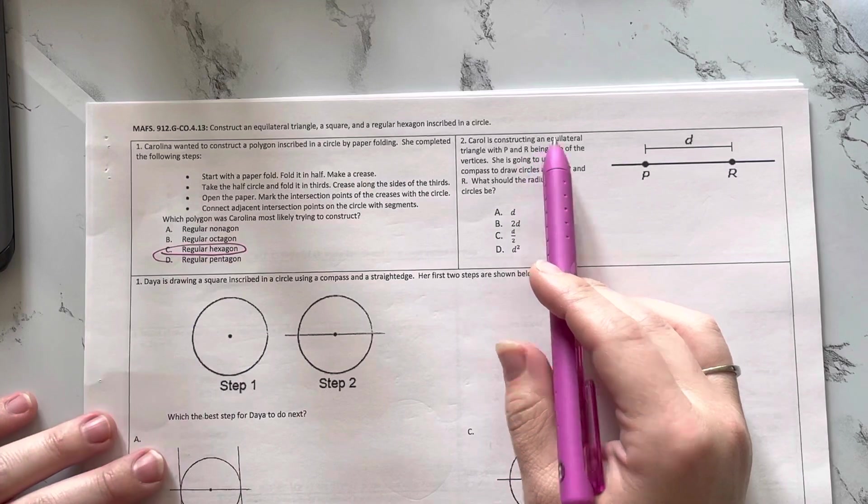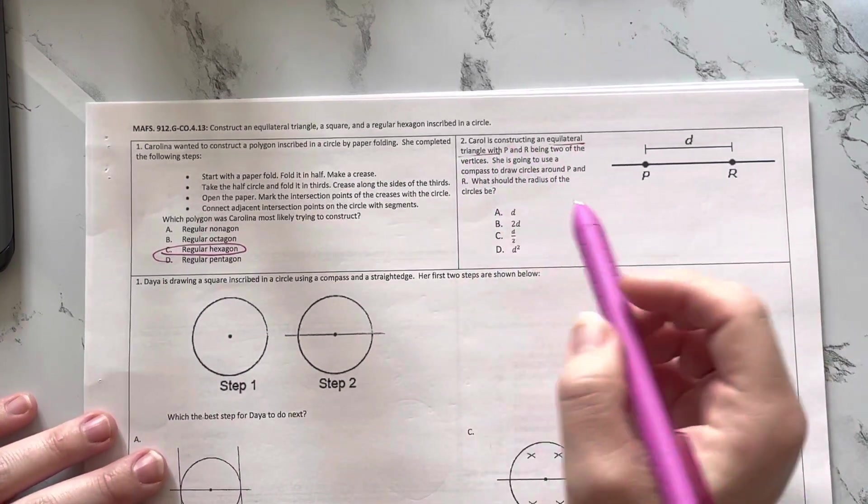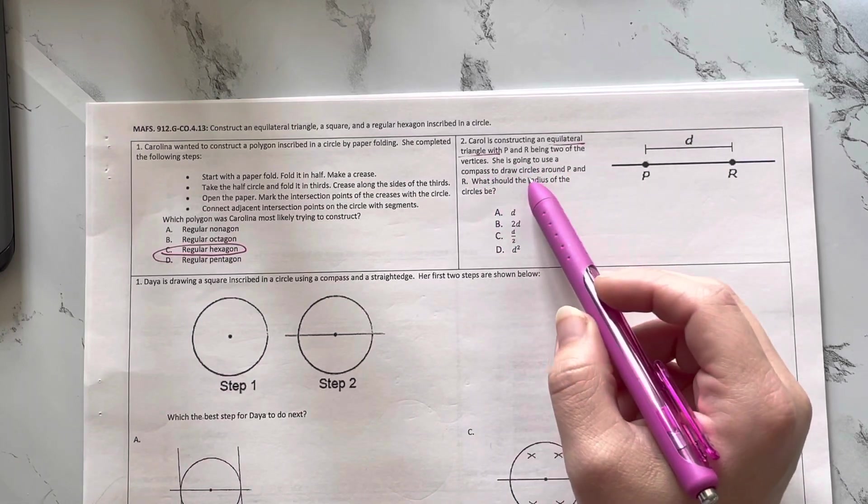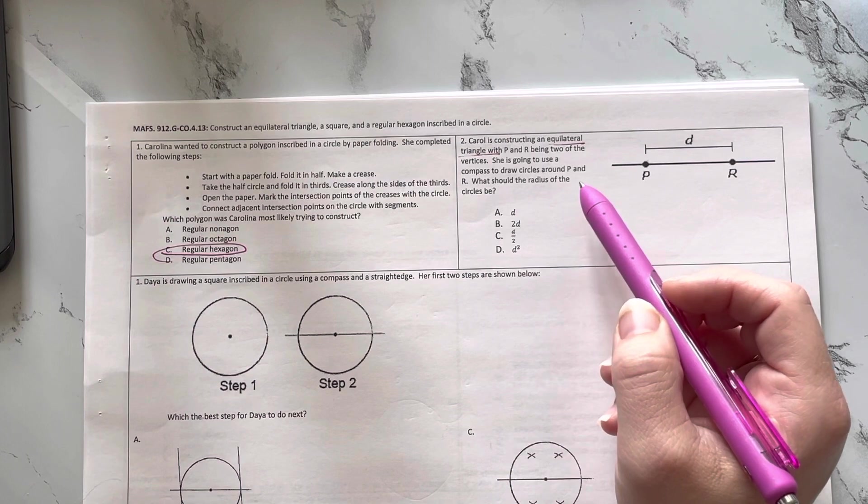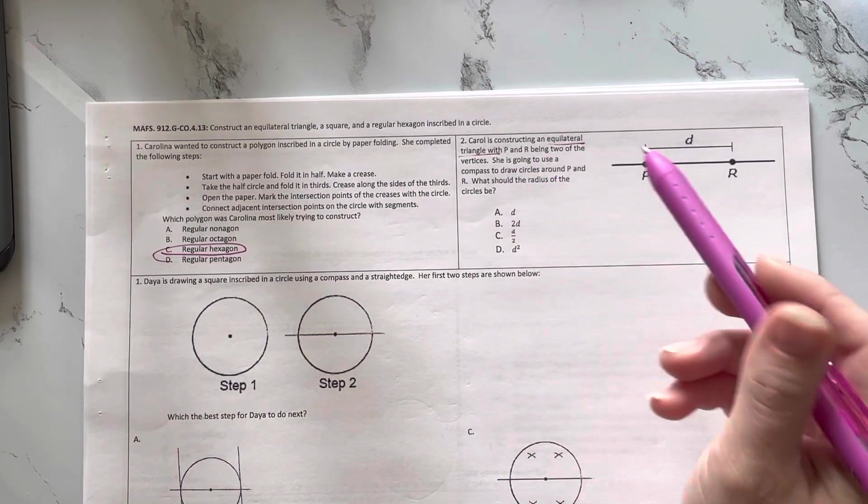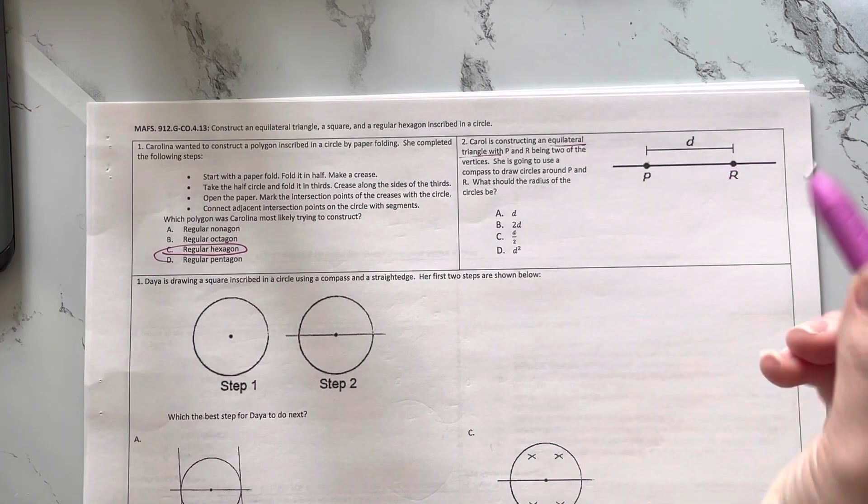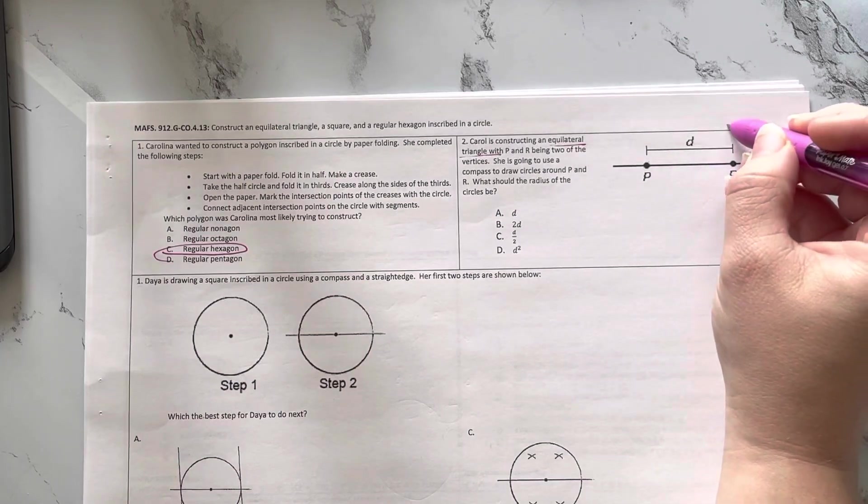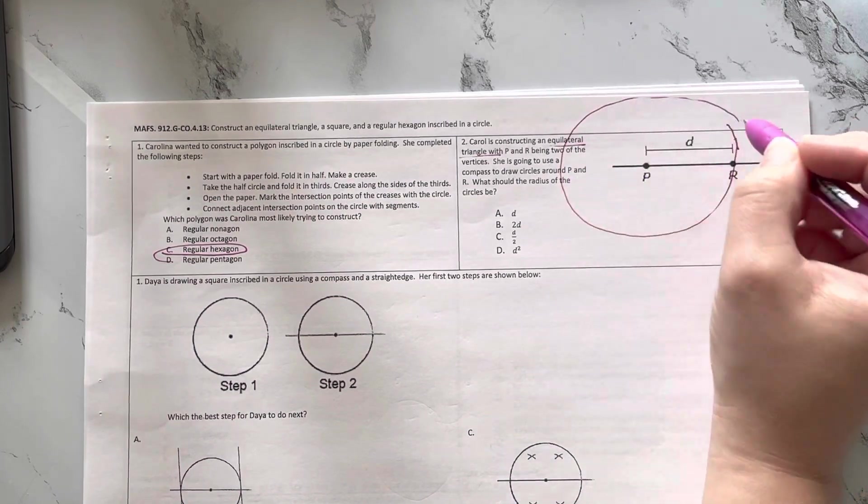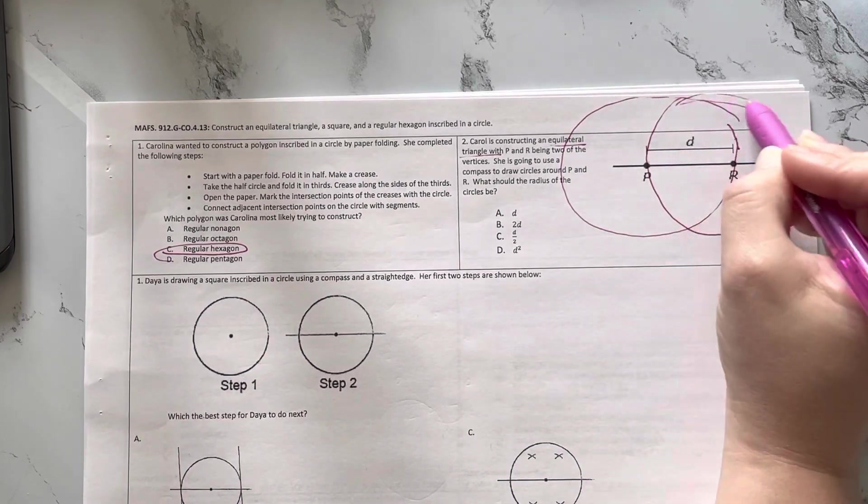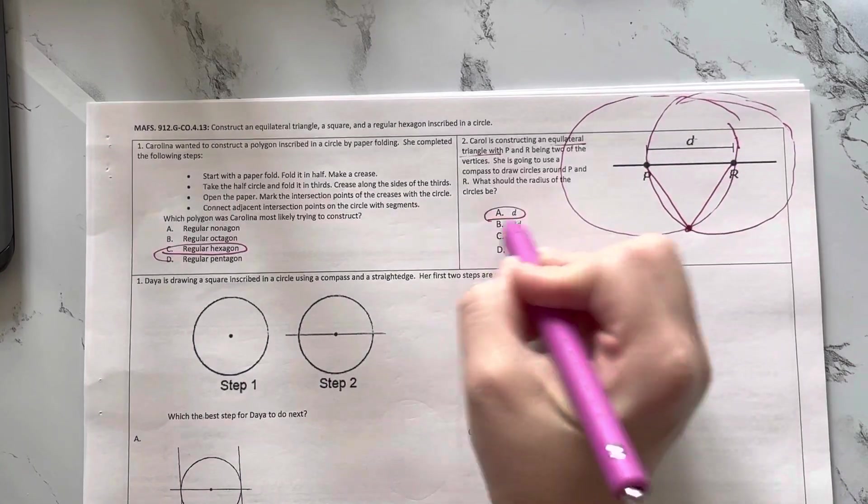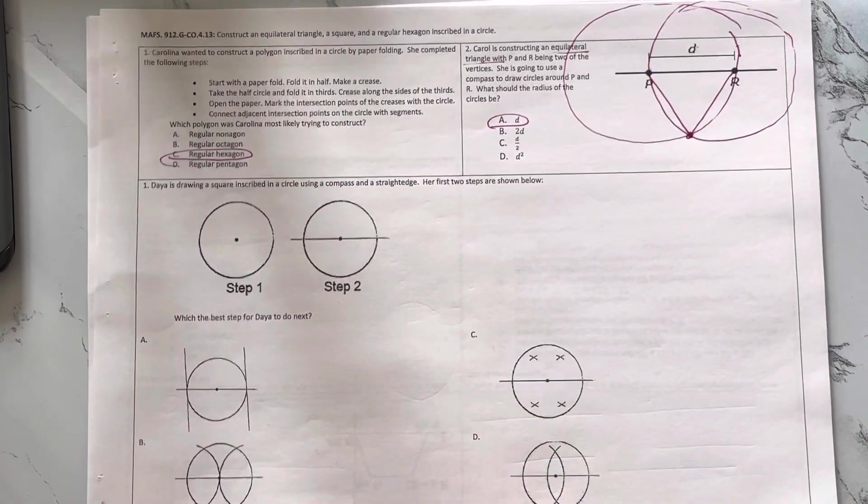Carol is constructing an equilateral triangle. Triangle means three congruent sides, with P and R being two of the vertices. She is going to use a compass to draw circles around P and R. What should be the radius of these circles? So let's see, she's going to use a compass to draw circles around P and R. What should be the radius? Well, if this is going to be one of the sides, and that's D, I want... I don't know if I can draw a nice circle. That is absolutely awful, guys. Let's pretend those are nice circles. I would want my point to be here. So to get that, I want my radius to be the length of D. Wow, that was really bad circles. I apologize.